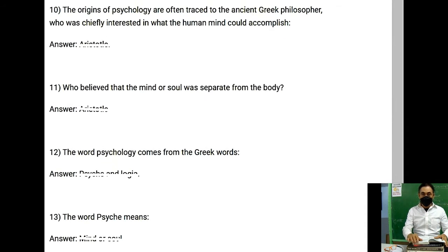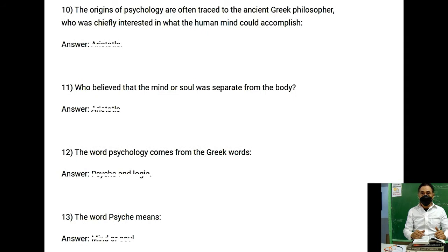Let's continue, number 10. The question is: The origin of psychology are often traced to the ancient Greek philosopher who was simply interested in what the human mind could accomplish. Who was that Greek philosopher? Number 11: Who believed that mind or soul was separate from the body? Number 12: The word psychology comes from the Greek word? And number 13: The word psyche means?